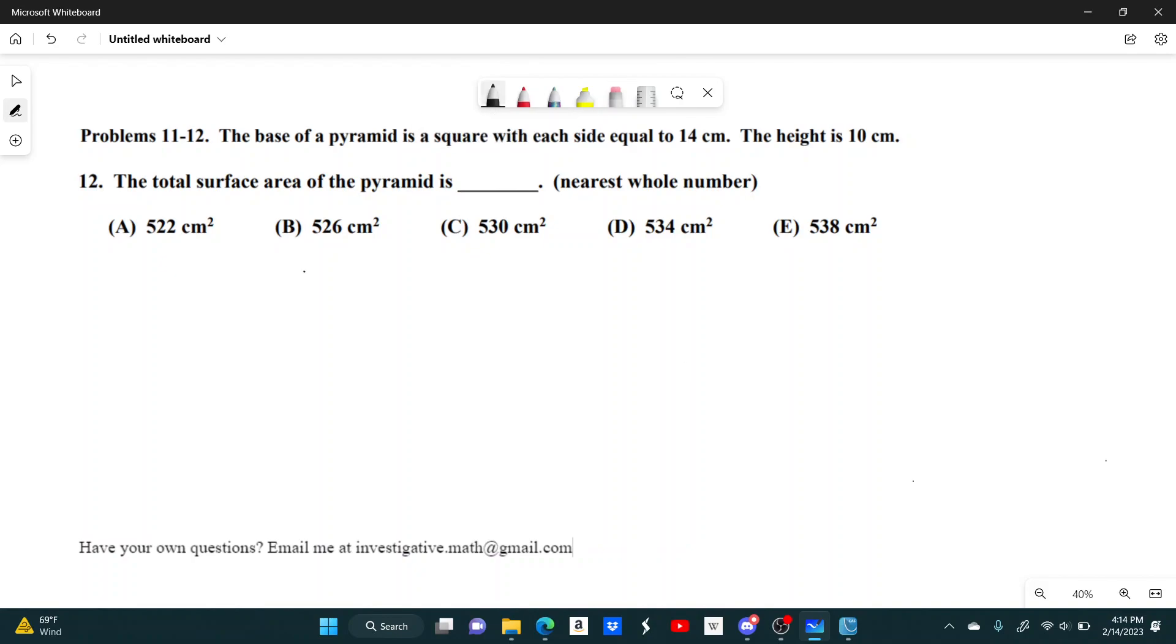So if you want to find the total surface area, there's really two main parts. You have the slanted triangles on the sides, and then you have the square base on the bottom.